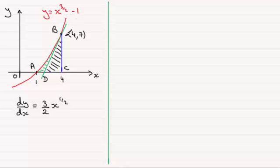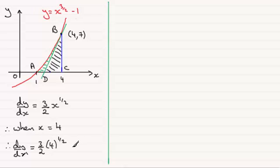So to get that gradient then at the point B, we just need to say that when x equals 4, substitute this in. We've got therefore the gradient given by dy/dx is going to be equal to 3 over 2 times 4 to the power a half. 4 to the power half, square root of 4 is 2. 3 over 2 times 2 just gives us 3. So a positive gradient of 3, as we can see.